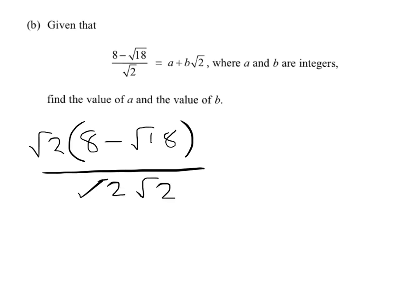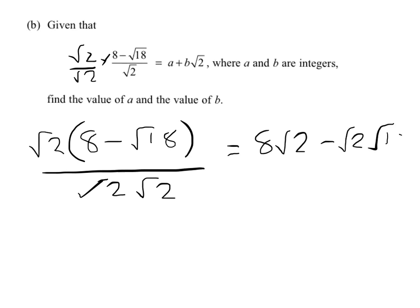You'll see that root 2 now appears twice — it's root 2 over root 2 — and anything divided by itself is 1, so it won't change the value. We times it through the fraction. Root 2 times 8 gives 8 root 2, and then we have minus root 2 times root 18. We should know that root 2 times root 2 is 2.